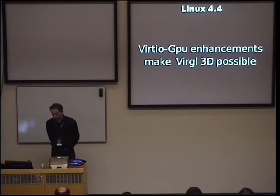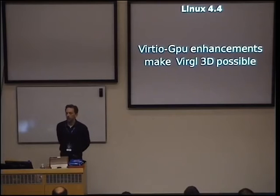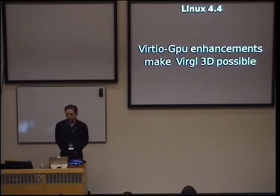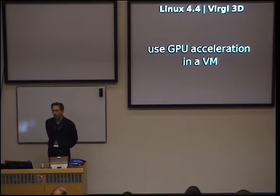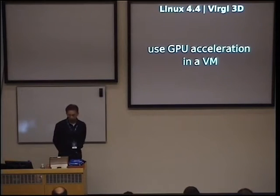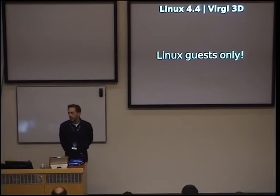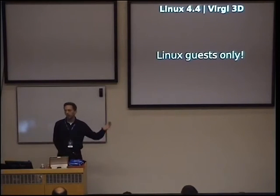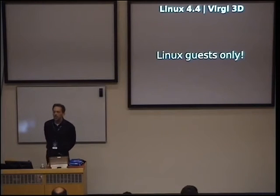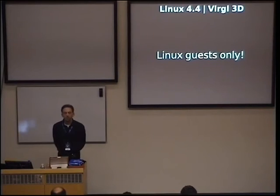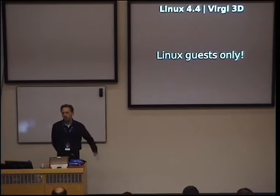What's new in these kernels? Linux 4.4 brought an enhancement for a driver called VirtIO GPU, and that enhancement makes something possible called Virtual 3D. Basically, you can use GPU acceleration — 3D acceleration — in a VM. But before you conclude you can use Windows with 3D in your VM, that is not possible. It's just for Linux guests. So if you're running GNOME 3 or another compositing desktop in your VMs, you will in the future be able to get GPU acceleration and the graphics interface might be a bit quicker.